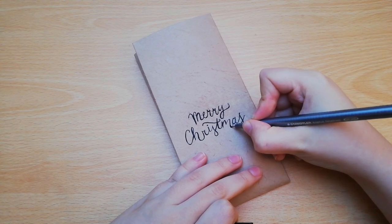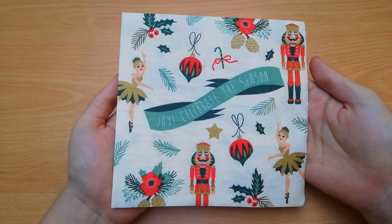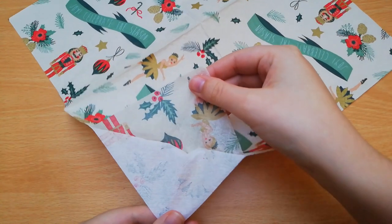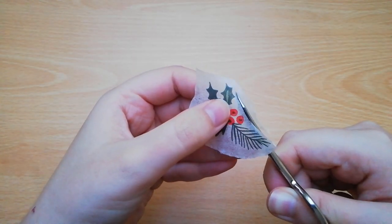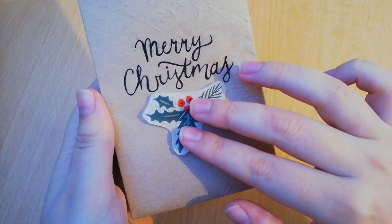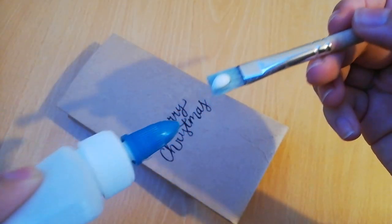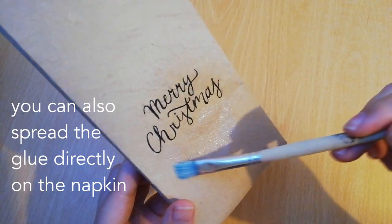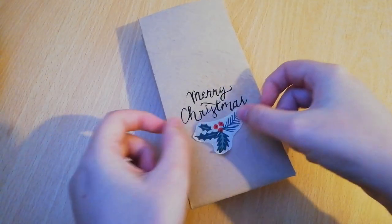Or if you're crap at drawing, try decoupage. Find a napkin with nice designs, tear off the layer with the print on it and cut out the design you like. Decide where to put it and spread some white or clear school glue on the bag with a brush or your finger. Place the napkin on top and smooth it out very gently.